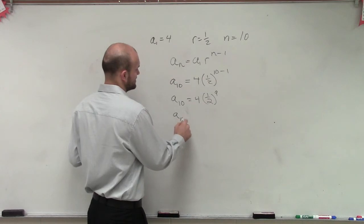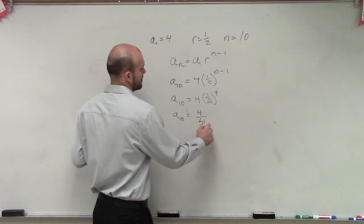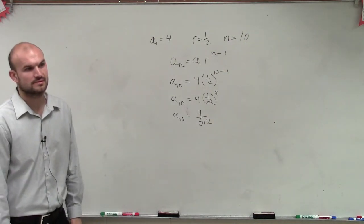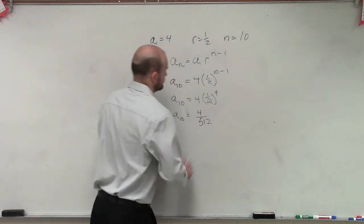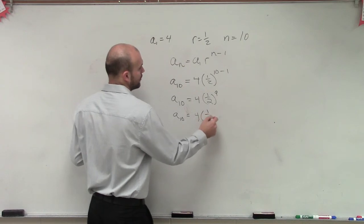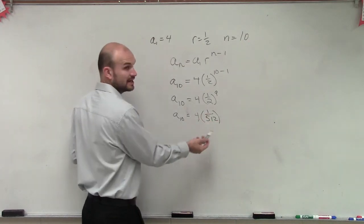OK. So then we have a to the 10th equals 4 times 512. 4 over 512. Yes? No? OK. It's 4 times 1 over 512. Right? Yes.